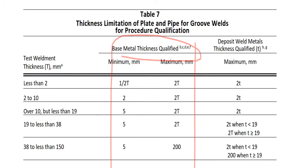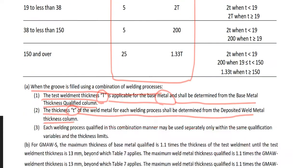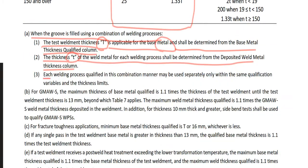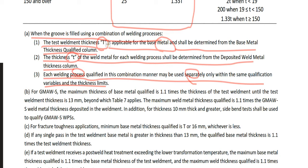This means the deposited weld metal thickness qualified, lowercase t. Number 3: each welding process qualified in this combination manner may be used separately only within the same qualification variables and thickness limits. So if we use GTAW and SMAW, the qualification thickness shall be applied separately.